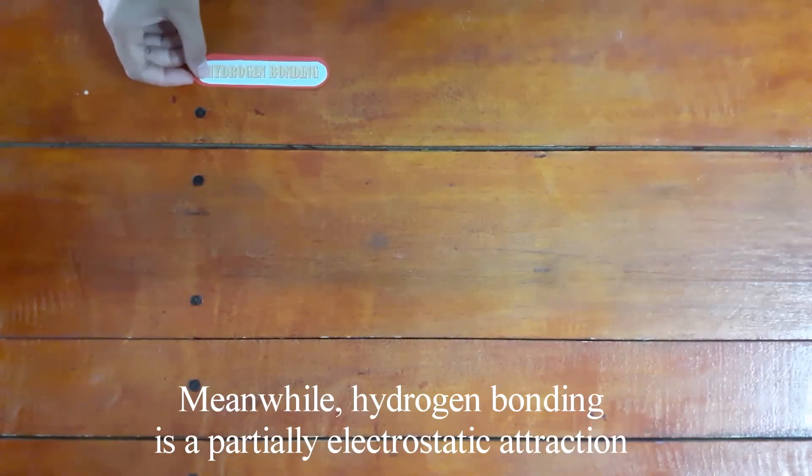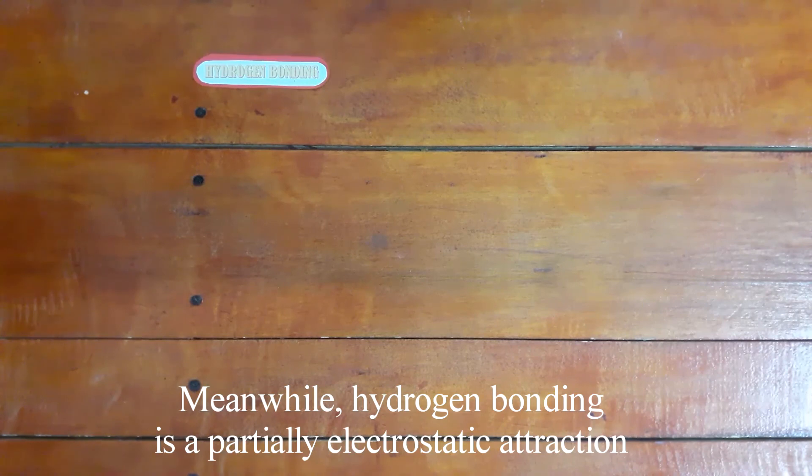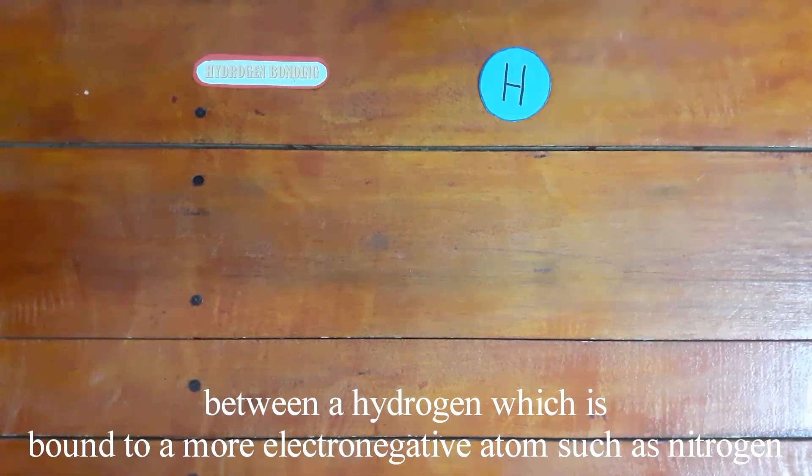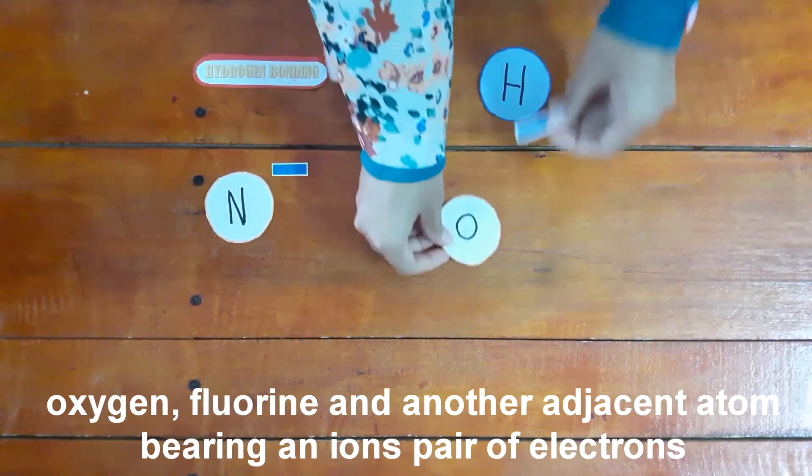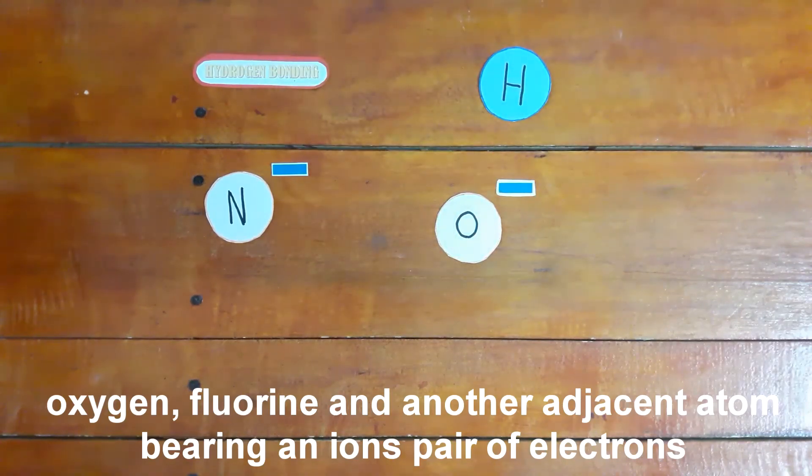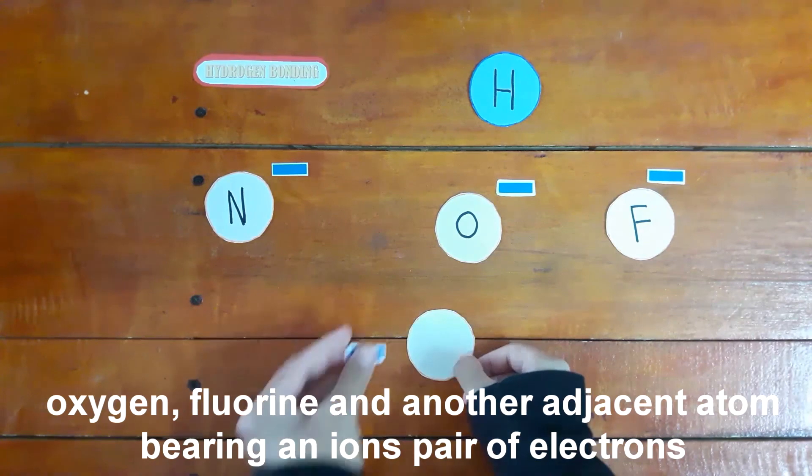Meanwhile, hydrogen bonding is a partially electrostatic attraction between a hydrogen which is bound to a more electronegative atom, such as nitrogen, oxygen, fluorine, and another adjacent atom bearing an ion spare of electrons.